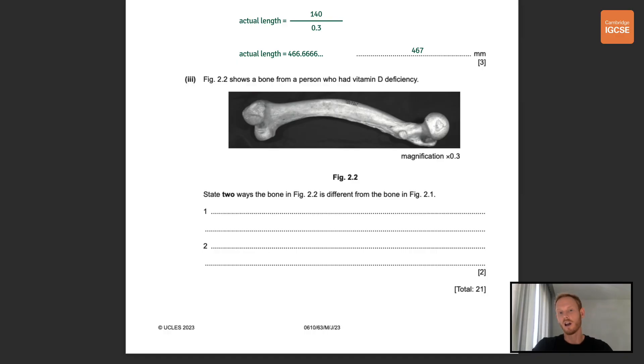Okay final question. Very well done if you followed this far and comprehended everything because I have been going fairly quickly. Figure 2.2 shows a bone from a person who had vitamin D deficiency. So this looks like an example of rickets. State two ways the bone in figure 2.2 is different from the bone in figure 2.1. So this is just a case of say what you see. So this bone has a curved shaft, the other one had a straight shaft and there are markings in the middle of the shaft. You could have also mentioned that the head on the left is twisted at a different angle or that there are two projections visible or simply that the bone is shorter. Okay well done that was everything for this IGCSE biology paper 6 breakdown. Leave a thumbs up if you appreciate or benefited from this video and remember to subscribe if you want to be notified when I upload the next one which will be on the multiple choice papers, papers 1 and 2.